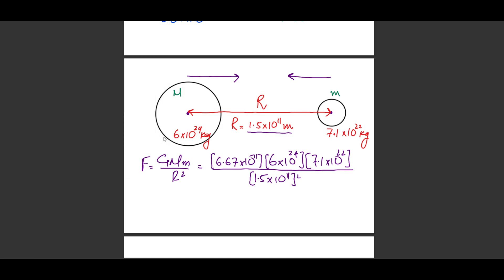The value obtained for gravitational force is 1.26, which rounds to 1.3 × 10¹⁵ newtons to two significant figures. Be advised that the force of attraction is the same from both perspectives — 1.3 × 10¹⁵ N from the larger mass perspective and also 1.3 × 10¹⁵ N from the smaller mass perspective. This is because it is a Newton's third law force pair, so the magnitude is the same regardless of which object you consider.